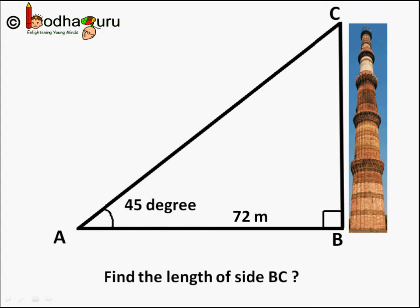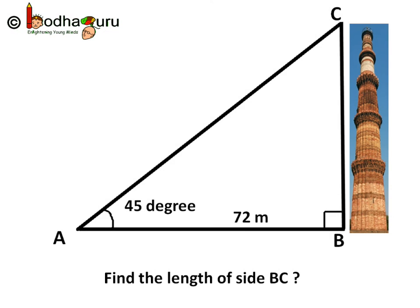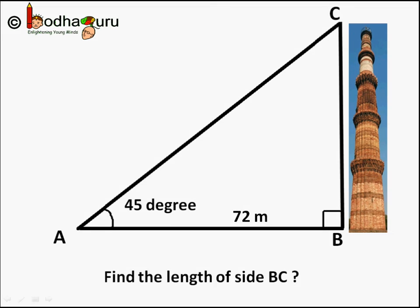Here the right angle triangle is given and let's say the angle A is 45 degrees. And the distance between point A and the base of the Qutub Minar, that is point B, is 72 meters. And we need to find the height of Qutub Minar which is the length of side BC.